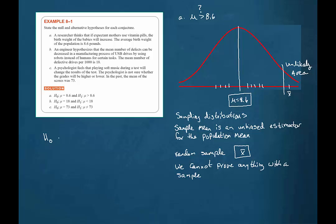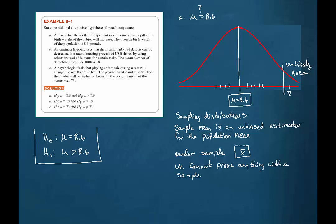We would reject that the population mean is 8.6. The alternative hypothesis is what we would conclude in the event that we reject the null hypothesis. If we land way up here, we would then conclude that the population mean is greater than 8.6. So here would be the null and alternative hypotheses for this particular example.